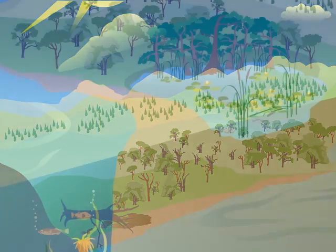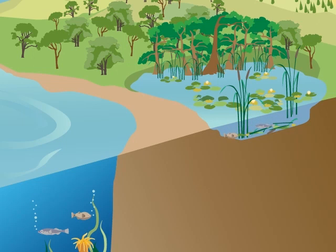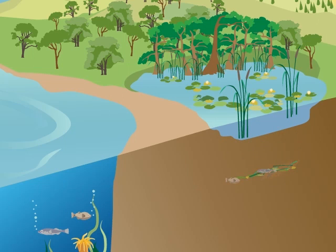In certain places, like swamps and the bottom of the ocean, dead plants and animals don't completely decompose, and they end up buried in layers of sediments. Over millions of years, heat and pressure turn the carbon from these plants and animals into fossil fuels.